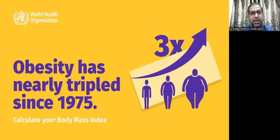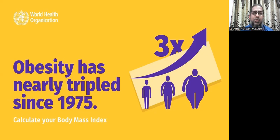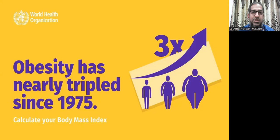There are three grades of obesity: grade one, two, and three, or mild, moderate, and severe. A BMI of 30 to 35 is mild obesity or grade one. A BMI of 35 to 40 is grade two or moderate obesity. And if the body mass index is more than 40, you are suffering from severe obesity or grade three obesity.